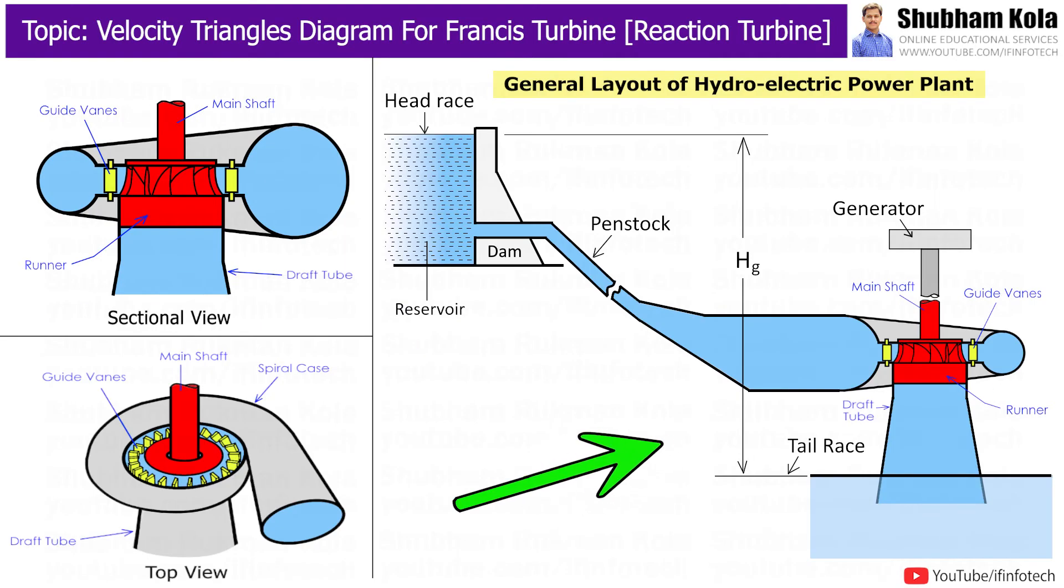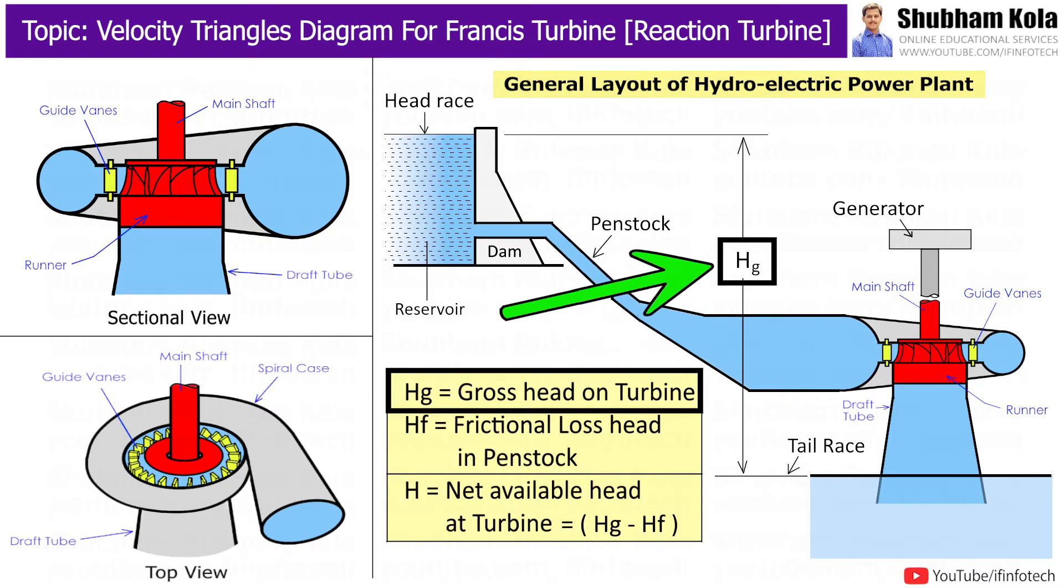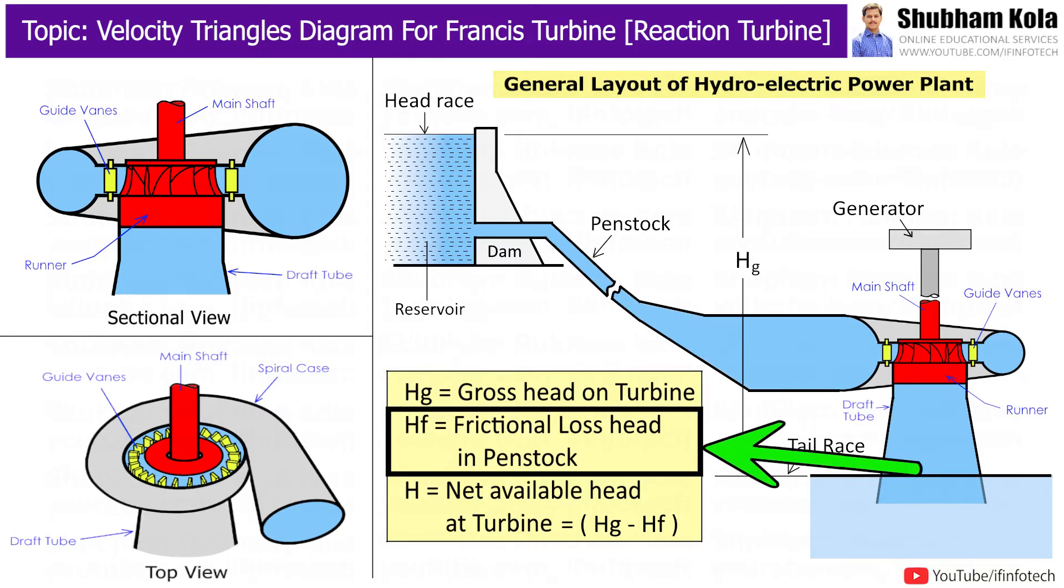Here figure shows general layout of hydroelectric power plant using reaction turbine, where gross head, represented as Hg, is the difference of level between head race and tail race. Hf is the frictional loss in penstock and H is net available head at turbine, i.e. Hg minus Hf.